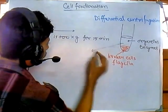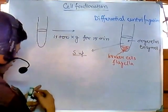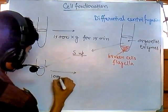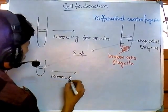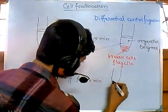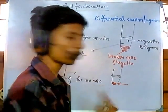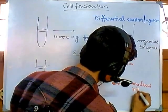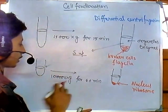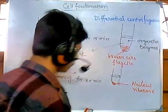We take out that supernatant — the soup — and give it another spin in a new tube at around 100,000 times G (one lakh G) for 60 minutes. After that spin, we again get pellet formation at the bottom of the tube with a supernatant above it.